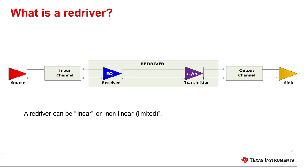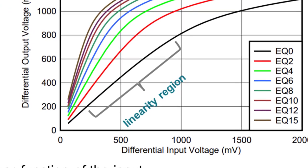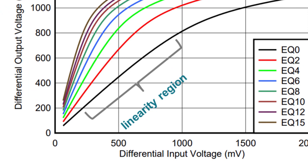A re-driver can be further classified into two types: a linear or a non-linear re-driver. A non-linear re-driver is also known as a limited re-driver. If the output signal amplitude of a linear re-driver is a near-linear function of the signal amplitude at its input for a certain range of input or output amplitudes, irrespective of the output shape, then the re-driver is termed linear in that input and output amplitude range. In the linear region, the output versus input signal amplitude graph appears as a straight line.